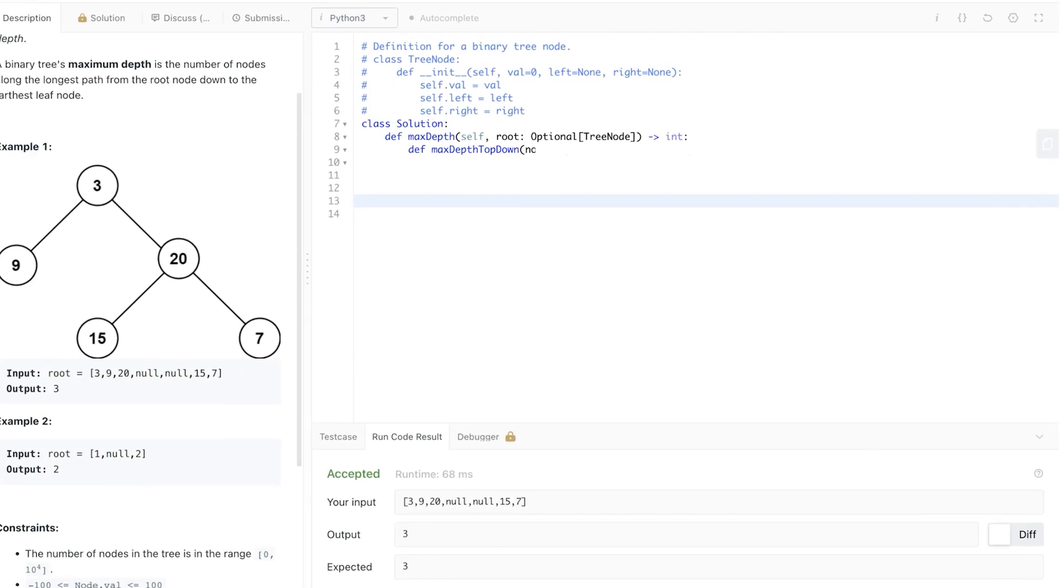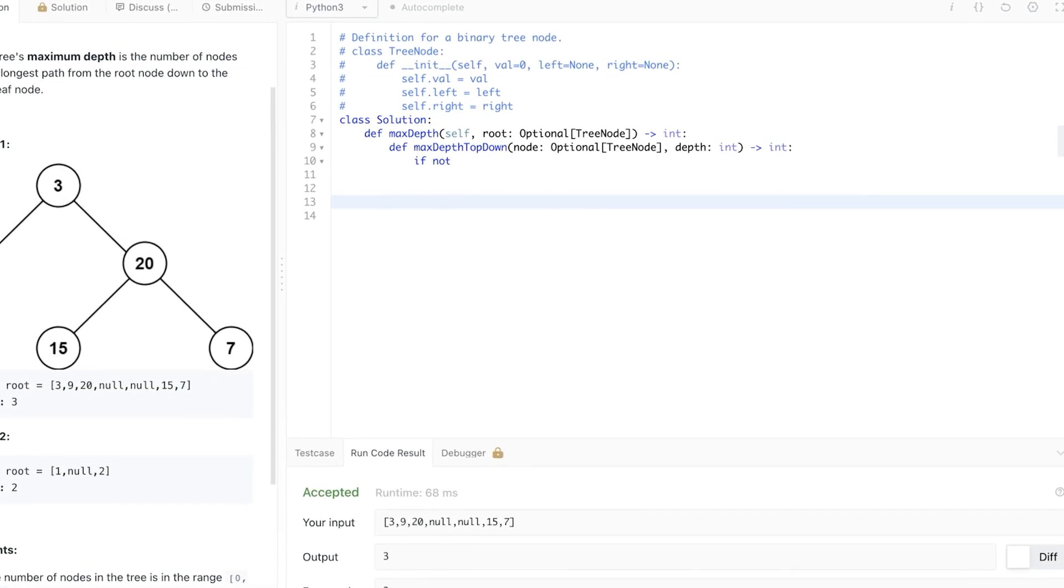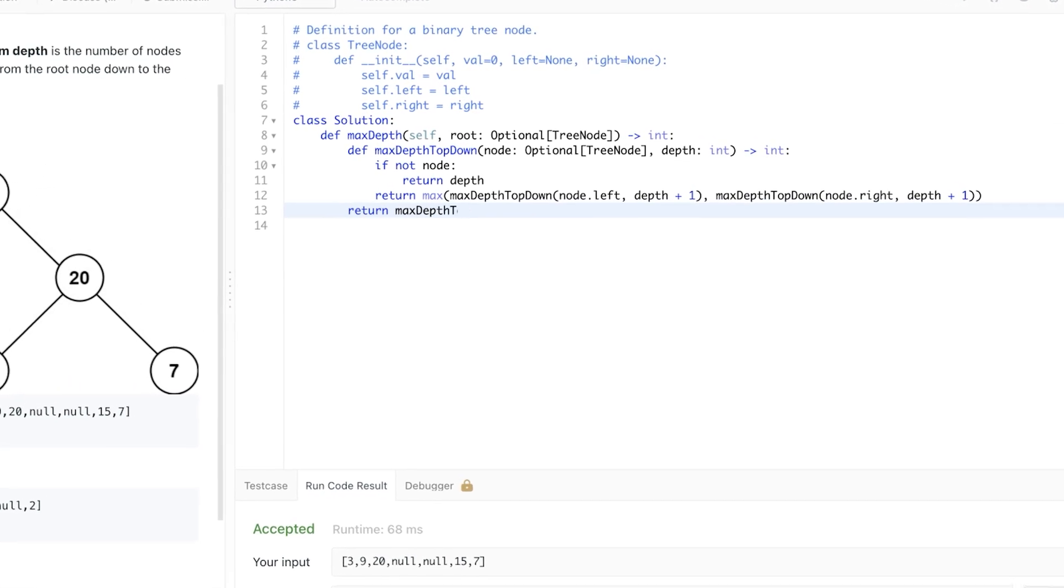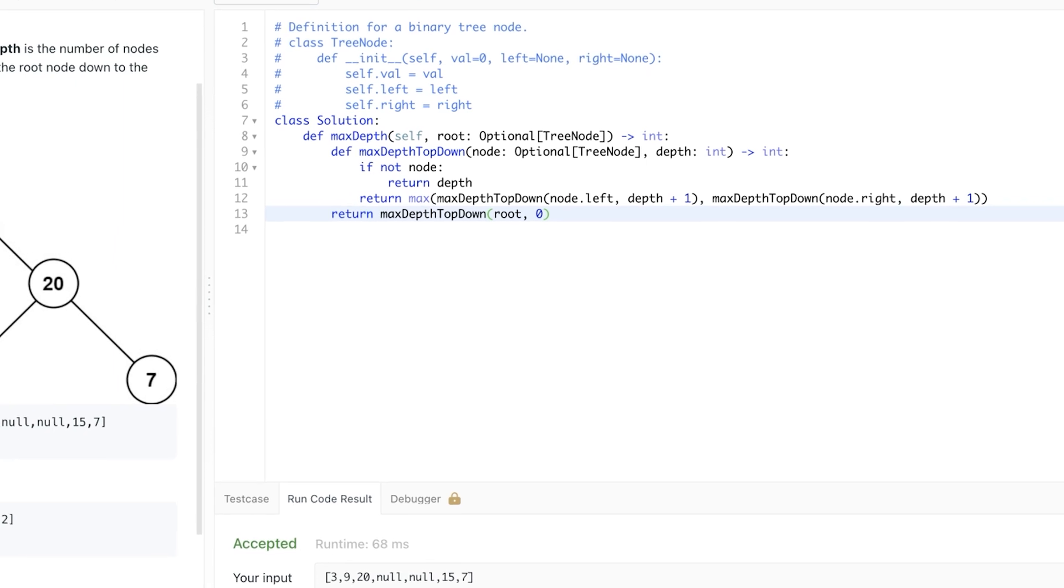If you want to look at the code, this is how it looks. If we reach the end, return depth if not, return maximum of left and right. And then we just call this helper function starting at root with initial depth of zero.